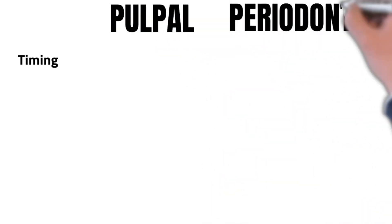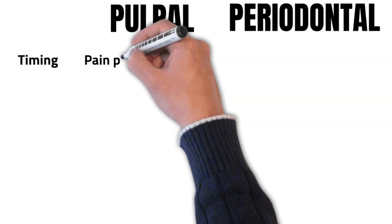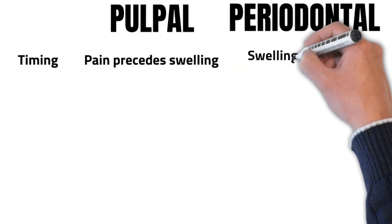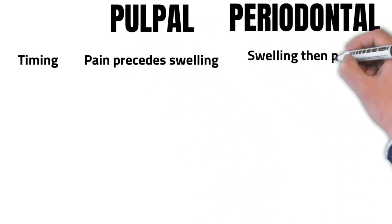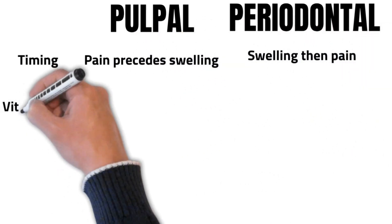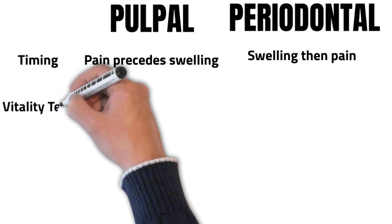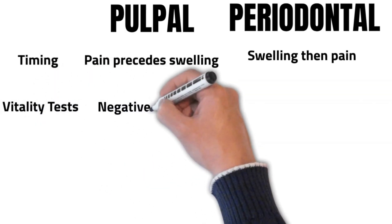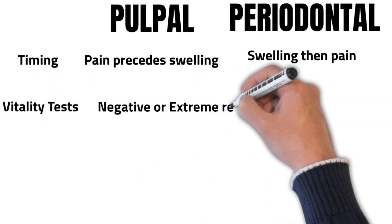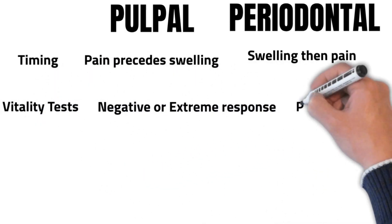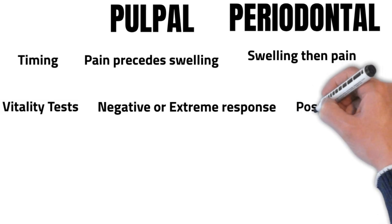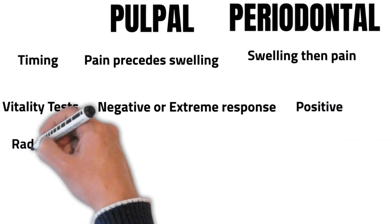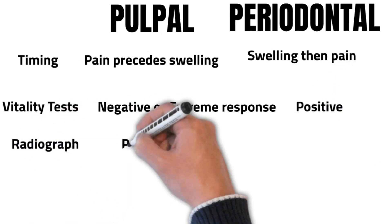whereas the swelling usually precedes the pain in periodontal pathology. Vitality testing usually reveals an exaggerated response or a negative response in pulpal pathology, whereas in periodontal pathology it's usually a positive response.